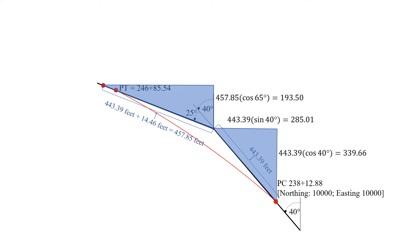Second triangle, another vertical component, the Y component in our northing and eastings. 457.85, that's the length, the hypotenuse of the triangle. The total angle now is 40 degrees plus 25 degrees, so cosine of 65 degrees gives us a Y component of 193.5.